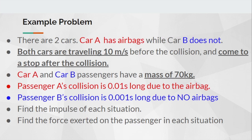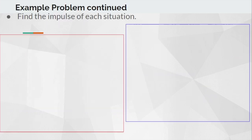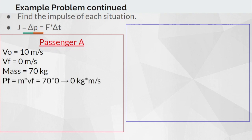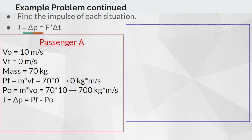We want to find the impulse and force exerted on each passenger. For passenger A: initial velocity 10 m/s, final velocity 0 m/s, mass 70 kg. Final momentum is 70 × 0 = 0 kg·m/s. Initial momentum is 70 × 10 = 700 kg·m/s. Therefore, impulse equals momentum final minus momentum initial, which gives negative 700 Newton·seconds.